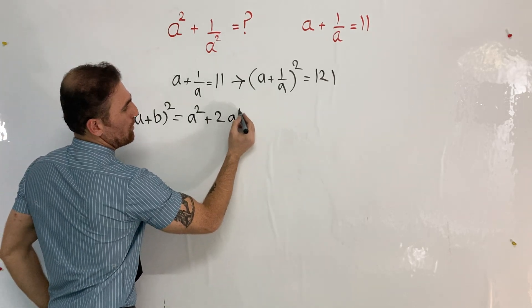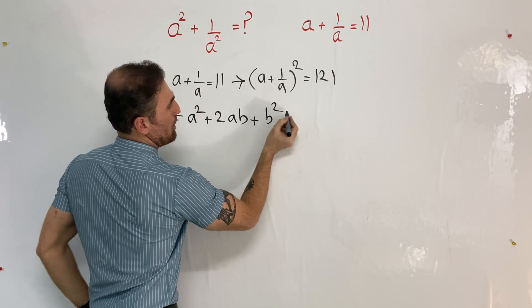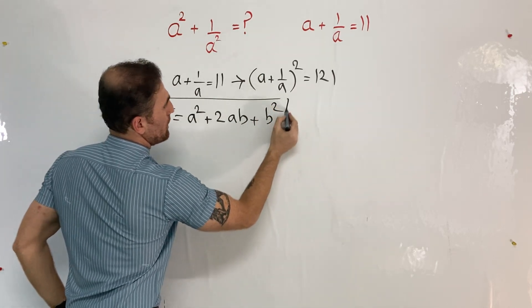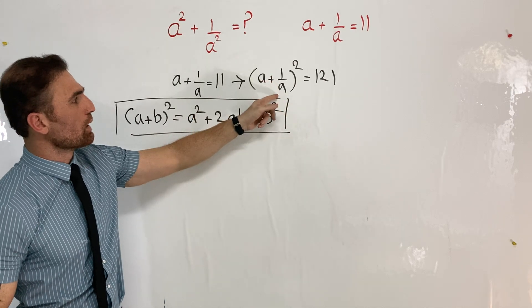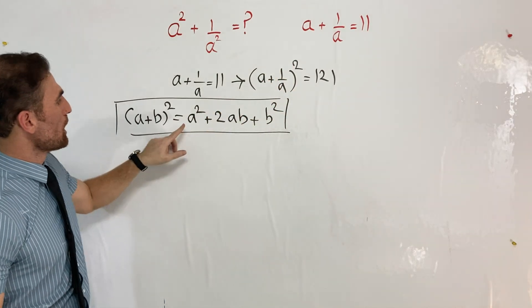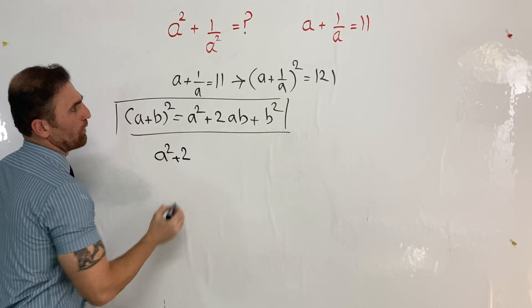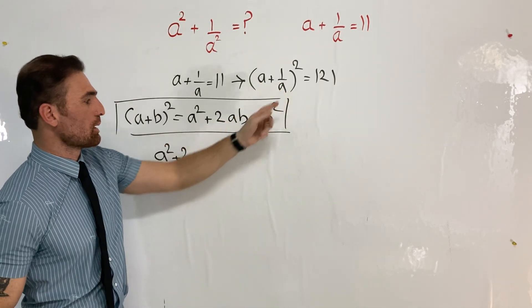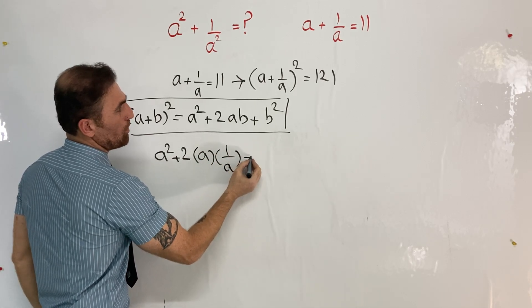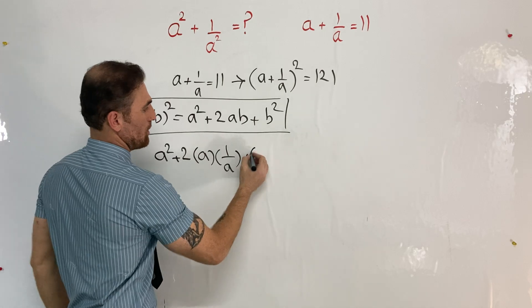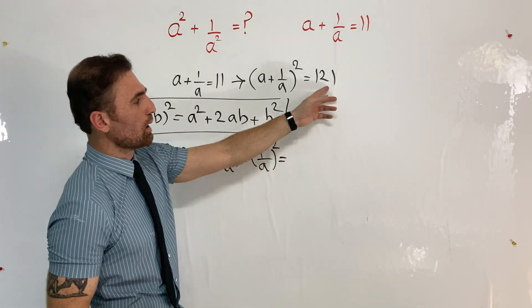So I'm going to use this algebraic identity to continue the solution. (a + 1/a)² is going to be first term squared plus twice the product of the first term and second term plus second term squared, which equals 121.